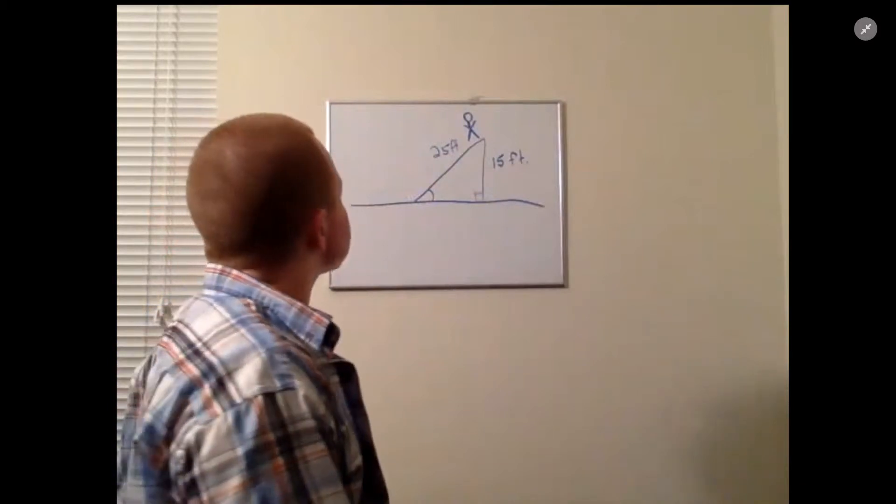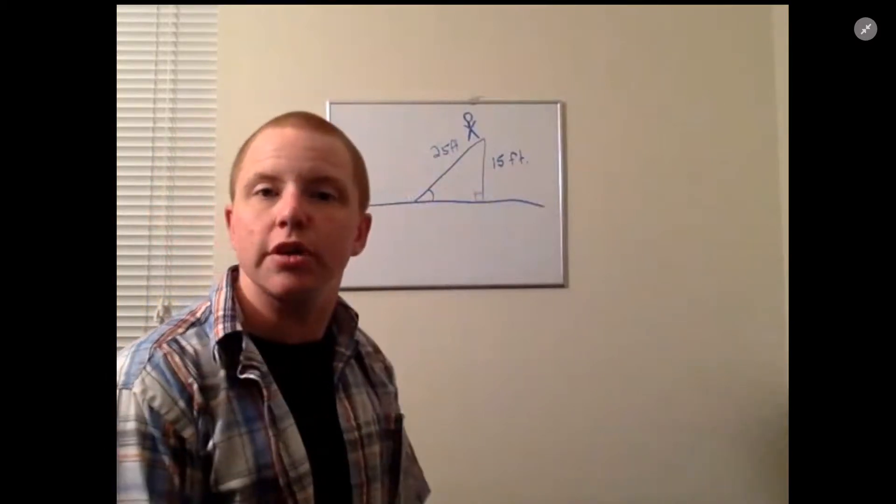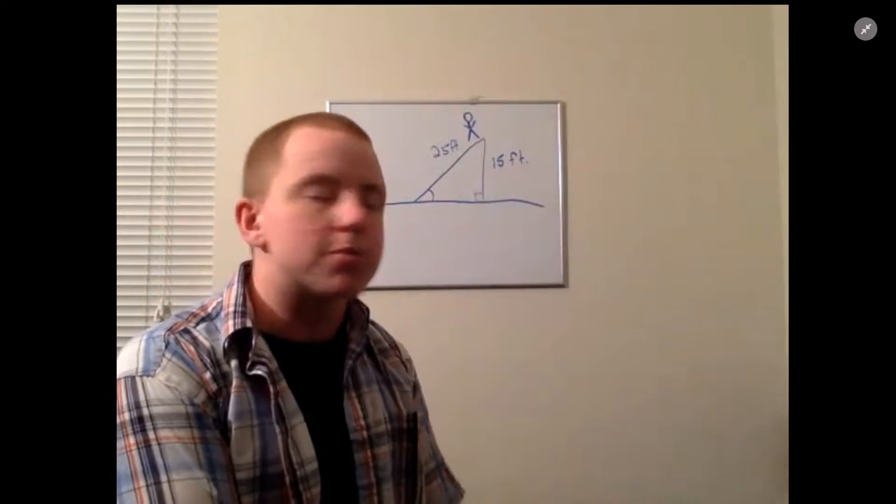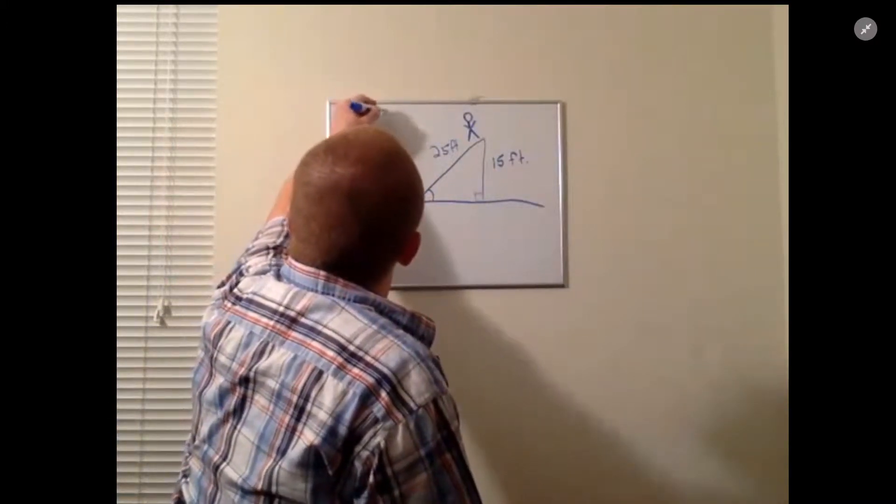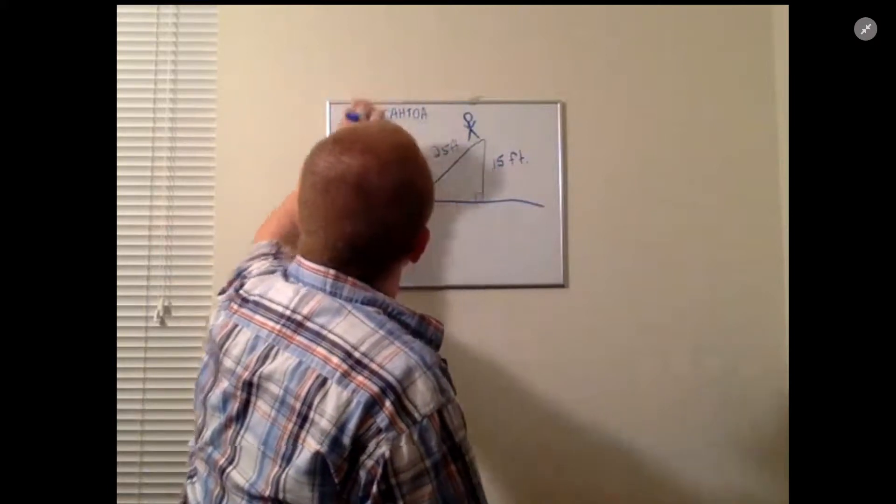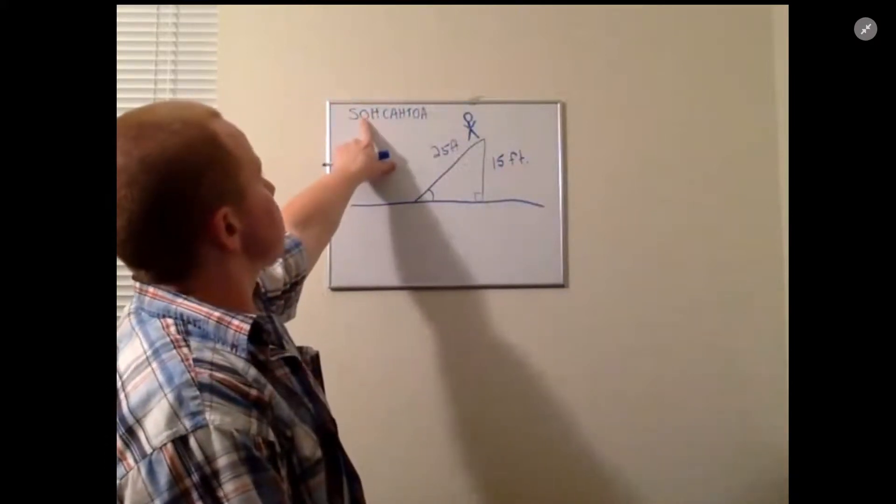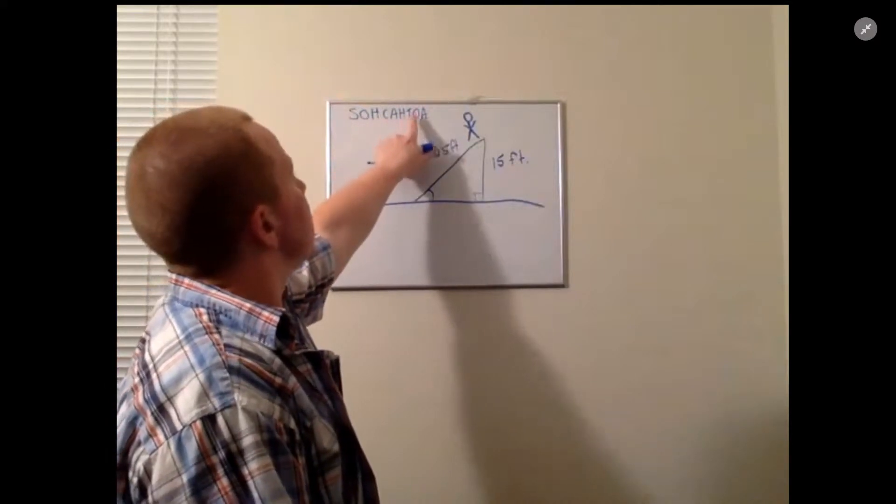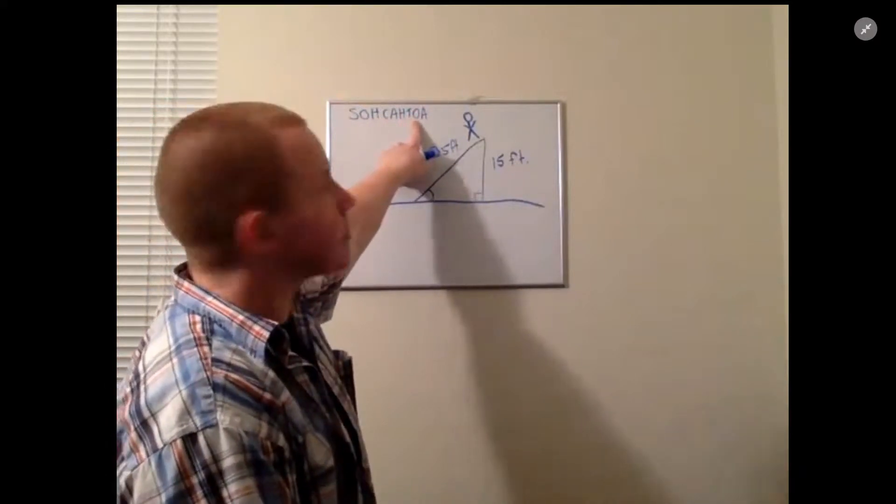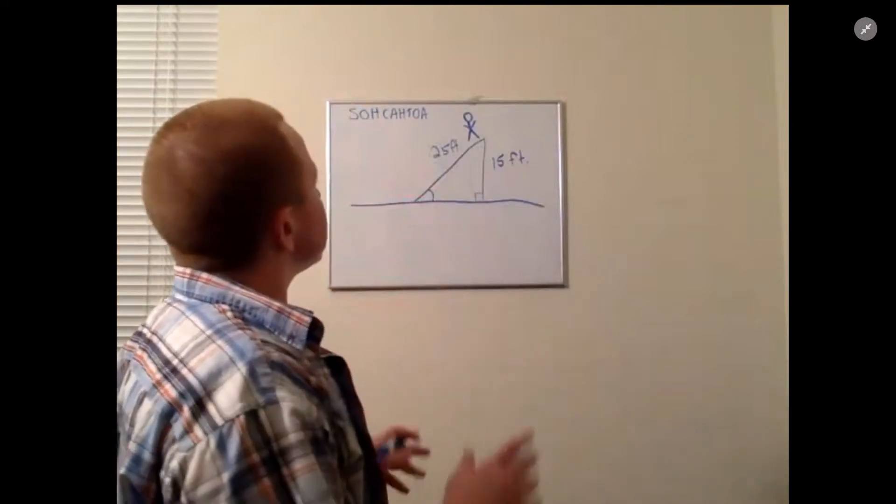Let me write that up here, where sine is opposite over hypotenuse, cosine is adjacent over hypotenuse, and tangent is opposite over adjacent.